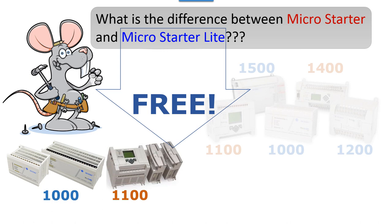The MicroLogix 1000 is no longer being manufactured. If you already have one, use it and get a copy of MicroStarter Lite — it's still on the Allen-Bradley website, though tough to find. We include it as a bonus on a disk with one of our manuals. The 1000 has actually gotten more expensive on eBay since discontinuation. So an 1100 is your best bet if you're going with MicroStarter Lite.